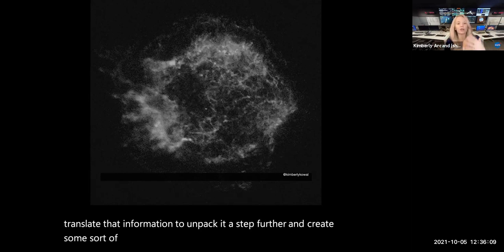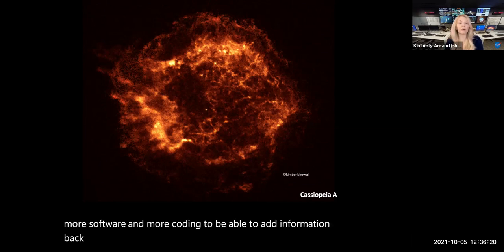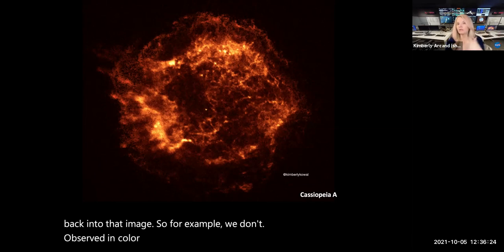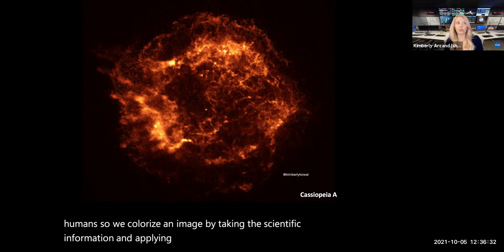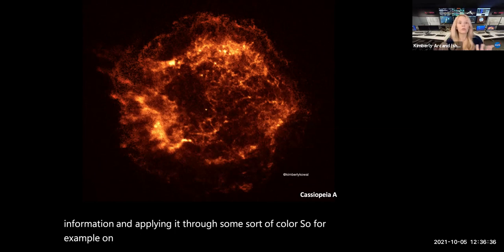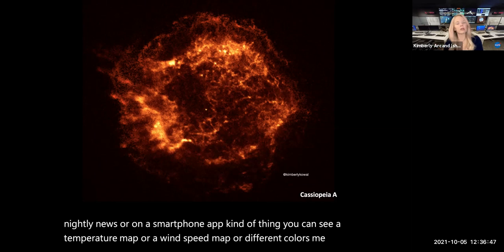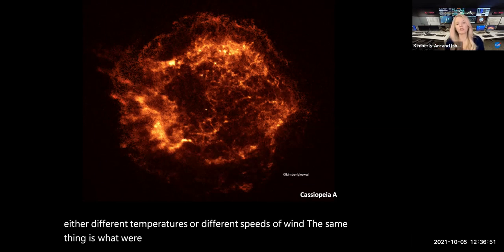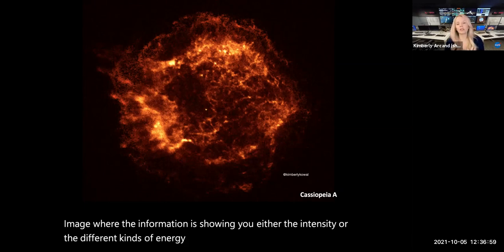We then use more software and more coding to translate that information to unpack it a step further and create some sort of product, some sort of plot or graph or something that looks like an image, like what is on my screen now. Then we use more software and more coding to be able to add information back into that image. So for example, we don't observe in color with Chandra because the x-rays are invisible to humans. So we colorize an image by taking the scientific information and applying it through some sort of color. So for example, on the weather report on your nightly news or on a smartphone app kind of thing, you can see a temperature map or a wind speed map where different colors mean either different temperatures or different speeds of wind. The same thing is what we're seeing here with the Chandra image where the information is showing you either the intensity or the different kinds of energy or temperature or what have you. And so we use more coding and software to be able to translate that information to something we can see.